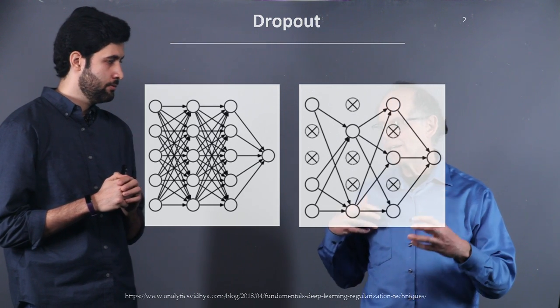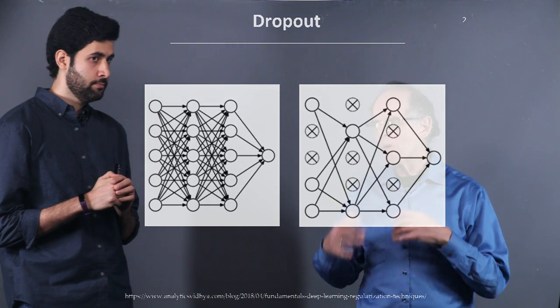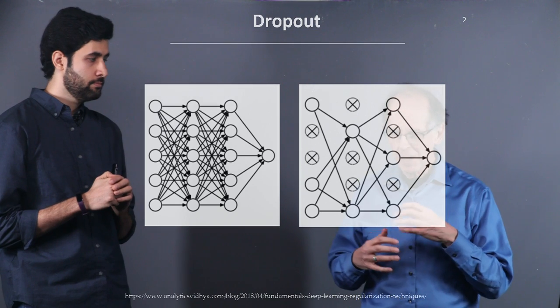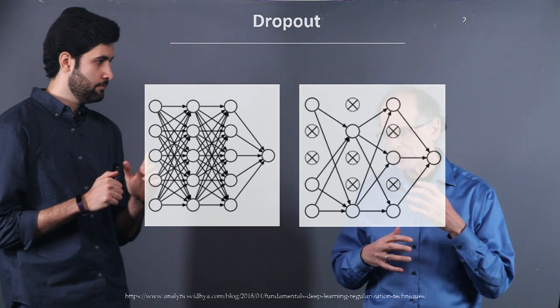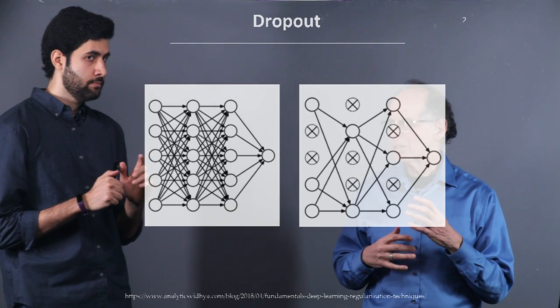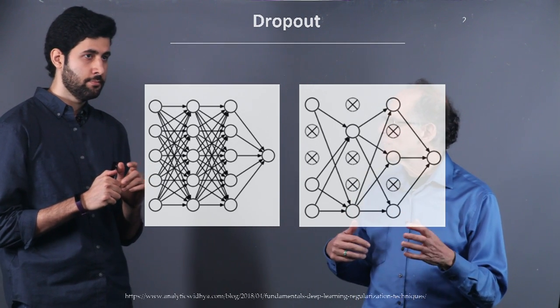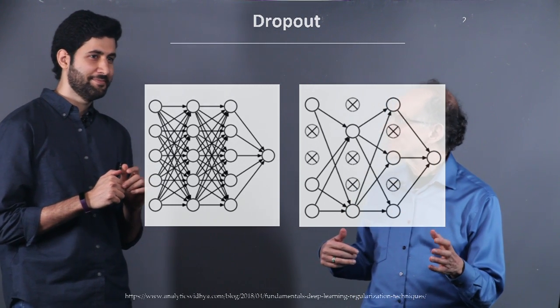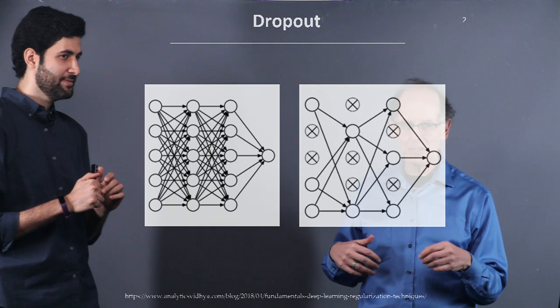That's a way of not overfitting — not trying to do everything — because we're training with fewer neurons.